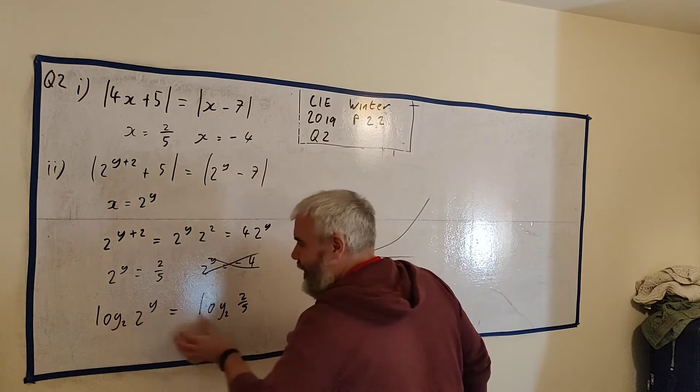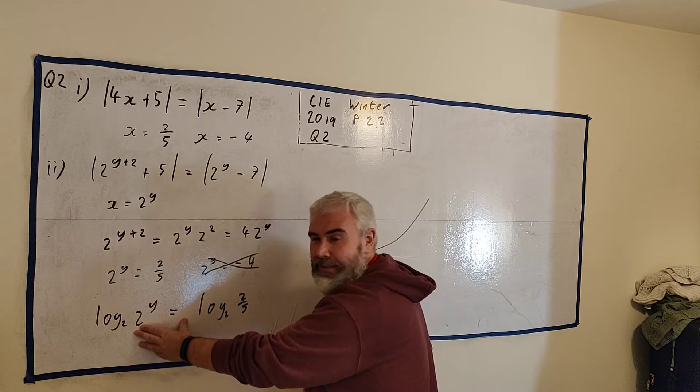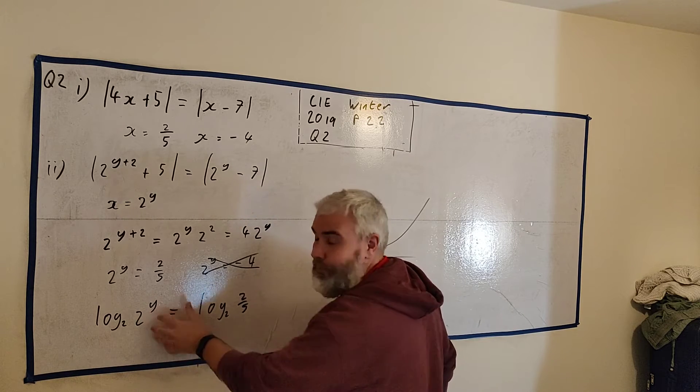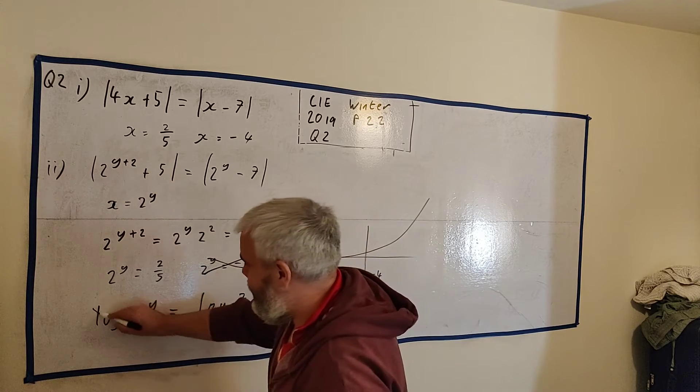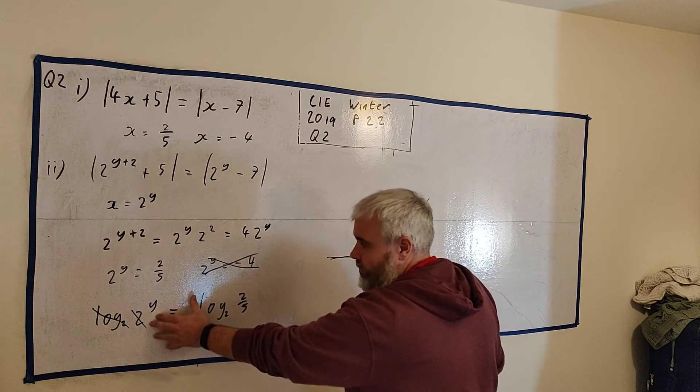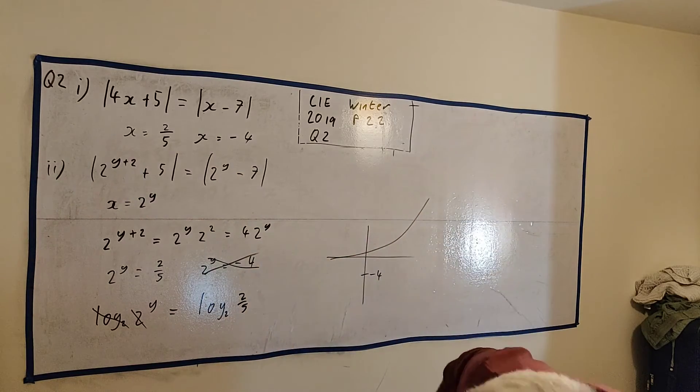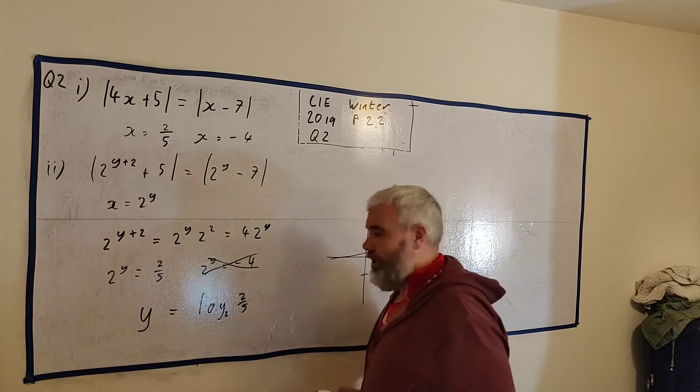So again, we're just doing the same thing to both sides. But what a log does is it destroys the base of an exponential like this. If this number and this number are the same, this will destroy this. And I'm just left with y equals this. This can all be put into a calculator.